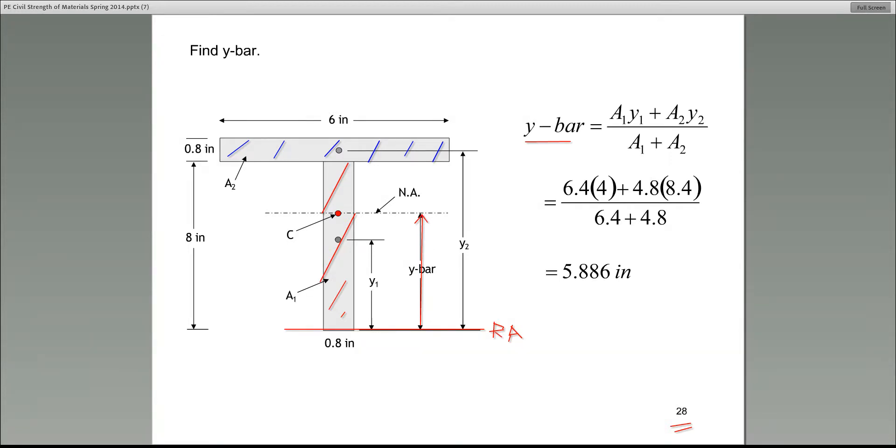The top is A1Y1 plus A2Y2 divided by A1 plus A2. Let's start with the denominator. The denominator is simple. A1 is the area number 1, in this case 0.8 times 8, and then plus A2. And that's the area number 2, which is 6 times 0.8.